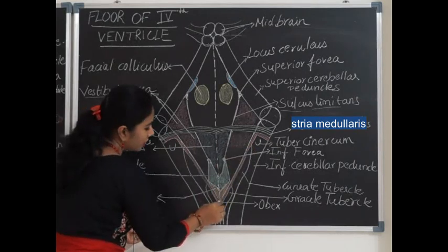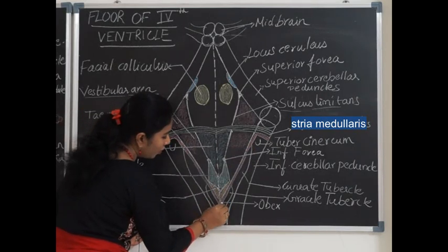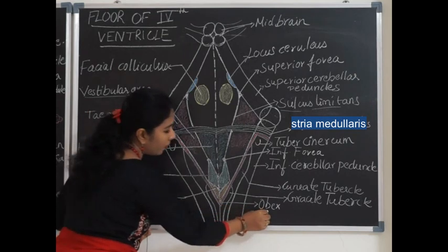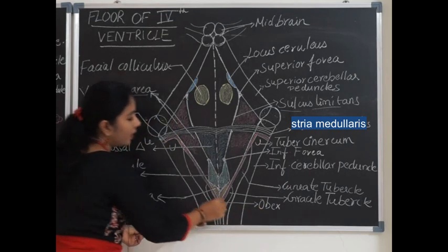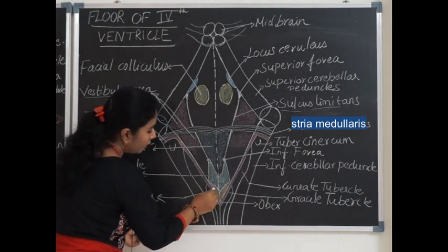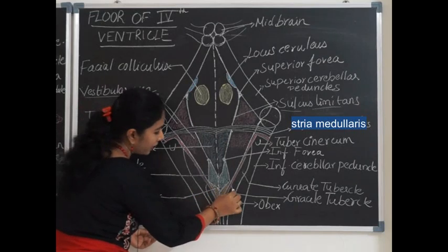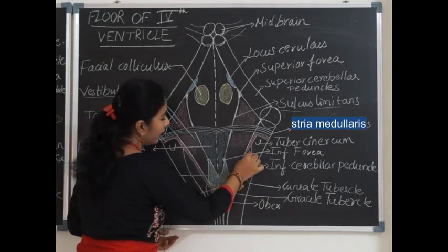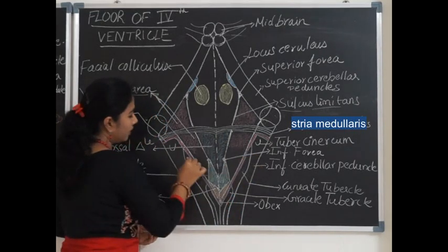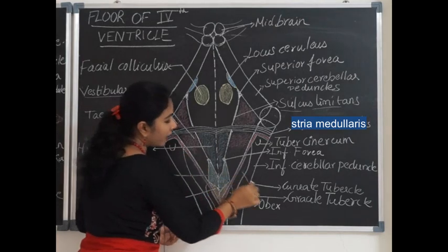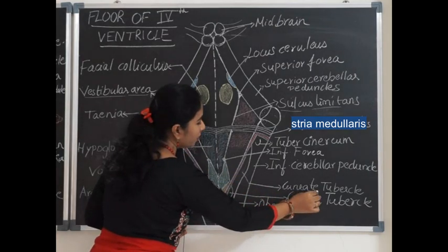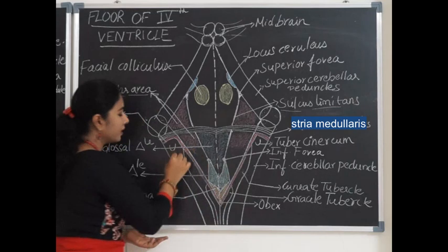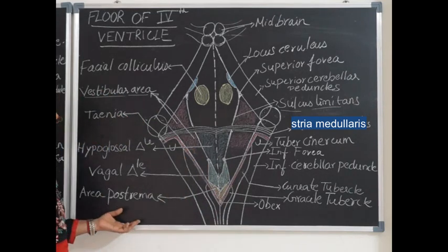The lower tip where the taeniae converge forming the roof of the inferior angle is called the obex. On either side of the area postrema, the gracile tubercle is present, and laterally the inferior part is bounded by the cuneate tubercle, with the lateral most boundary formed by the inferior cerebellar peduncle.